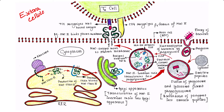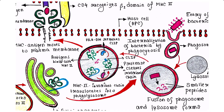Extracellular antigens originate from outside a host cell. Extracellular pathogens such as bacteria are engulfed by antigen presenting cells, or APCs, such as macrophages, B cells, and dendritic cells by phagocytosis. After internalization of bacteria, a vesicle is formed around it.